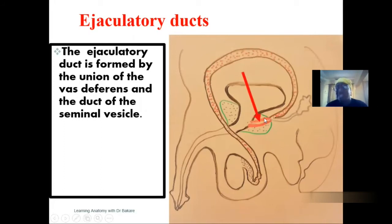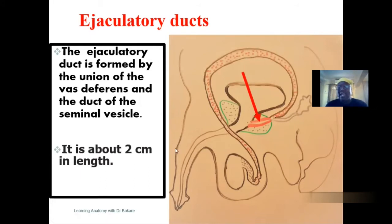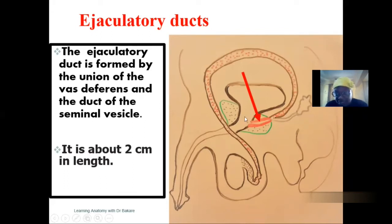The ejaculatory duct is a very short duct that is about two centimeters in length, and it pierces through the prostate gland to be emptied into the prostatic part of the urethra. The initial segment of the urethra that runs across the prostate gland is the prostatic urethra, and it is this specific region that the ejaculatory duct empties into.